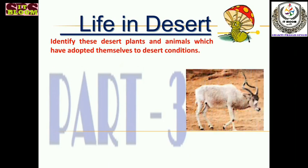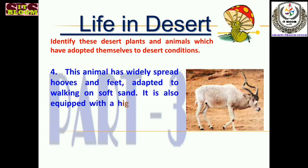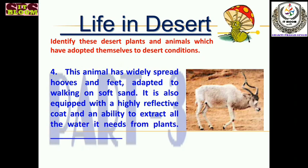This desert animal has widely spread hooves — hooves means feet — adapted for walking on soft sand. It is also equipped with a highly reflective coat and the ability to extract all the water it needs from plants. It can get maximum water from plants and store it. The answer is the addax.